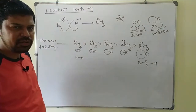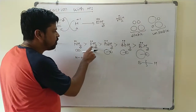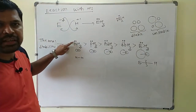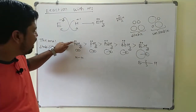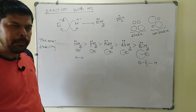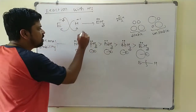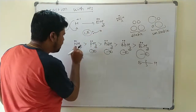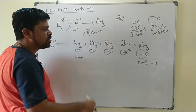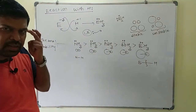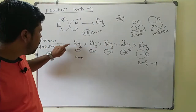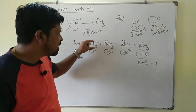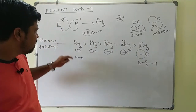Now, since each hydride has a lone pair of electrons on the central atom, these hydrides act as Lewis bases — species that can donate a lone pair of electrons. Among the Group 15 hydrides, ammonia is the strongest base and BiH3 is the weakest base. Down the group, the basic nature of the hydrides decreases.